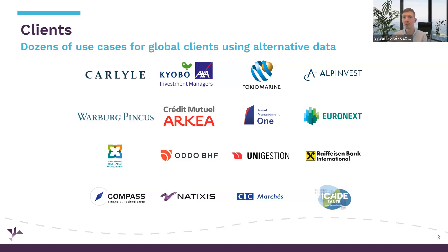Teams like Carlyle and Warburg are leveraging us to understand whether a company at the very early stage of due diligence is exposed to potential reputational or ESG controversy — to decide whether to move forward with the deal or stop it before spending a lot on consulting. Some teams also use us for portfolio monitoring, tracking hundreds of private companies they've invested in, and credit teams track thousands of assets across their portfolios.